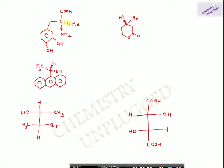Now a few worked examples. First, a chiral carbon attached with four different groups. We apply the priority rule: N gets priority 1 (highest atomic mass), the carbon attached with oxygen gets priority 2, the carbon attached with other carbons gets priority 3, and methyl gets priority 4. Since the lowest priority group is on the back side of the paper, no single swap is needed. The sequence is anticlockwise, so this carbon has S configuration.